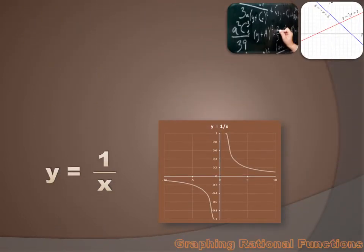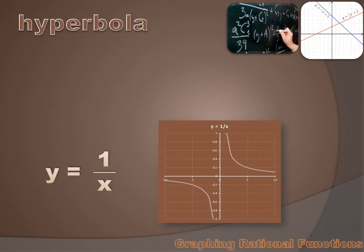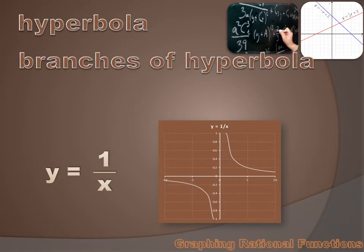Let's get some vocabulary out of the way. The first vocabulary you need to know is a hyperbola. A hyperbola is just this cute little curve that we're showing over here. It has two parts, and those parts we call the branches of the hyperbola. You'll notice that these branches approach the x-axis and the y-axis, getting closer and closer to those axes. But they never touch it.